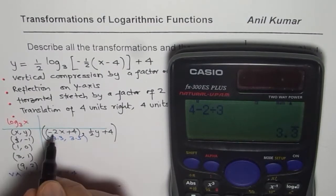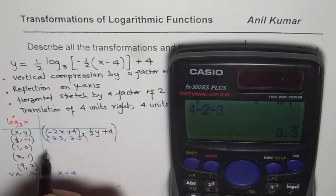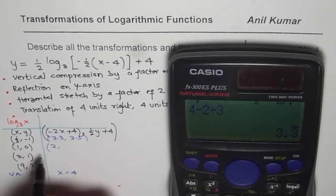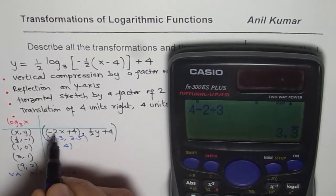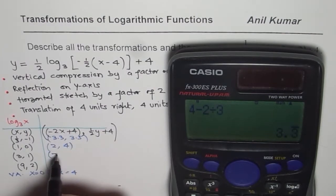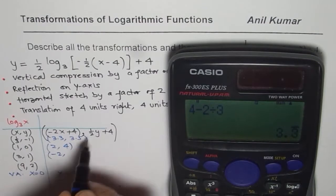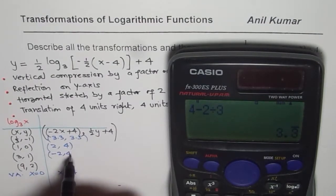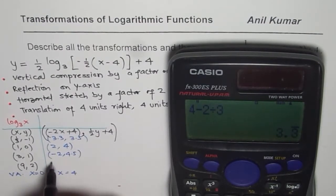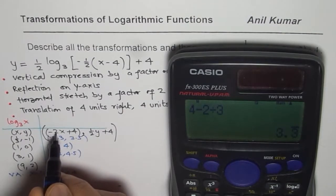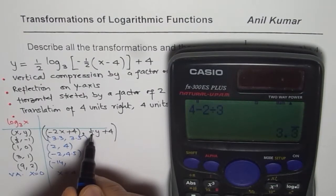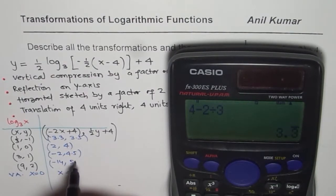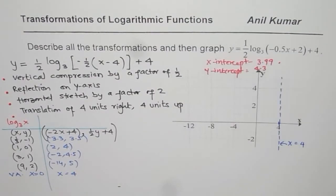1, half is, 1 times minus 2 is minus 2, minus 2 plus 4 is 2. 0 times, so we get 4 here. For 3, we get 3 over, 3 times 2 is minus 6, minus 6 plus 2 is minus 2. And then 1 times half is 0.5, so we get 4.5. If I use 9, 9 times 2 is minus 18, minus 18 plus 4 is minus 14. 2 times half is 1, and 4 plus 1 is 5. So these are the transformed points.